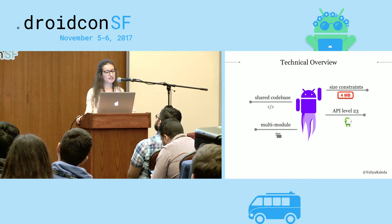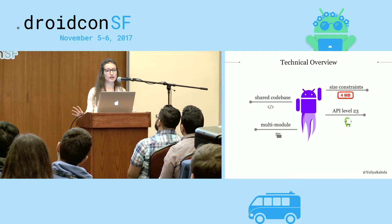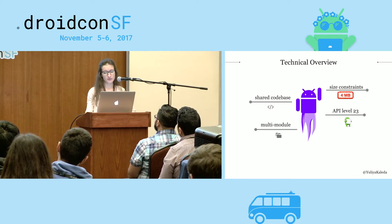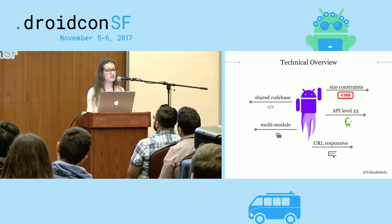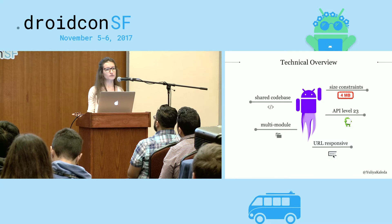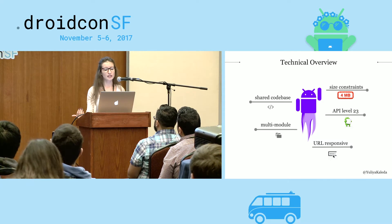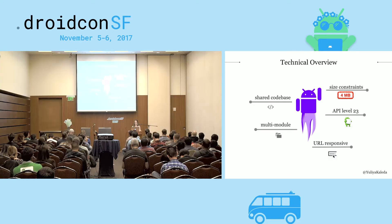Currently, Instant Apps are supported on API level 23 and above. Google is working to support Instant Apps on lower API levels. Another specificity of Instant App is that it's URL-responsive — in order to launch an Instant App, you have to click on a URL address.